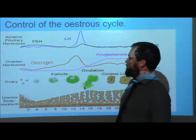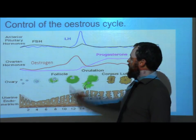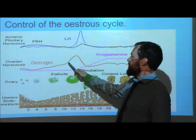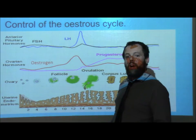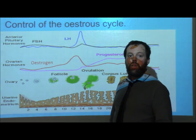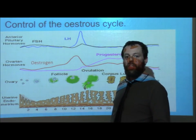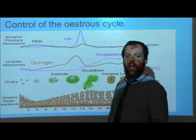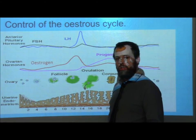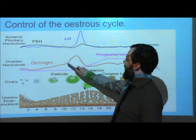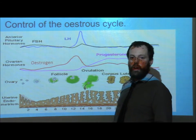Up until a certain point, where we see oestrogen hitting a certain critical level, where it then starts to stimulate the production of FSH rather than inhibit it. By stimulating FSH, FSH then causes a greater production of oestrogen, and we see that here — the oestrogen level is starting to rise.